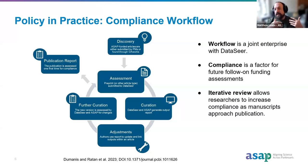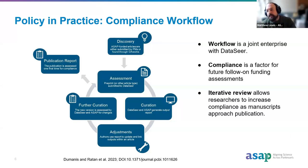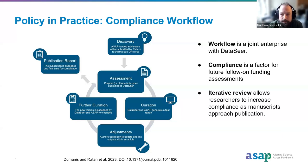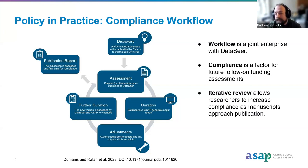We send this back to the authors, they make changes and provide feedback — for example, 'We can't share this due to material transfer agreement issues,' or 'We did share this but forgot to include the link.' We update the report and send it back. This is an iterative process done many times for many articles. Teams gradually and incrementally improve, and we get to see how teams improve once they've gone through this process a handful of times. When the final article is published, we send a publication report — and articles must be compliant with policy before we pay APC requests.